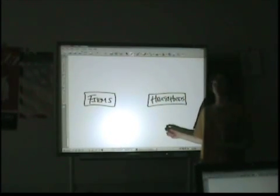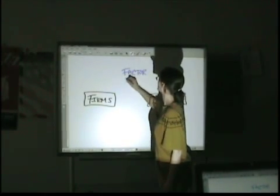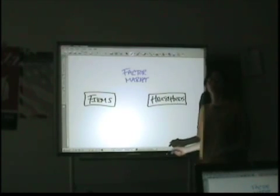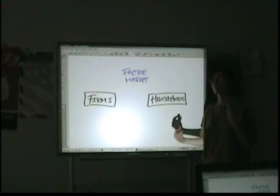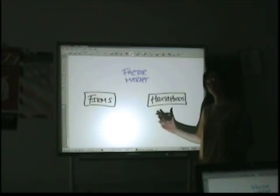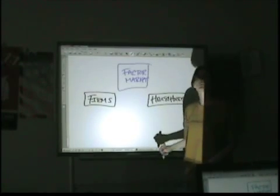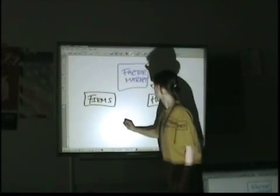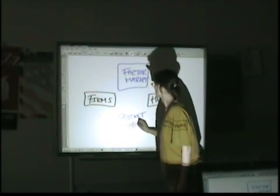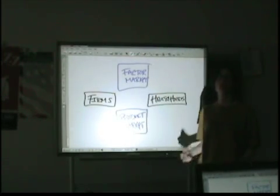Now we want to throw in our two markets. We've got our factor market, or you can always call it a resource market. Resources are factors of production because those are the things that are used to produce. So those two terms are interchangeable: resource market, factor market, same thing. And then the other one is going to be the product market, where our finished goods are going to be bought and sold.